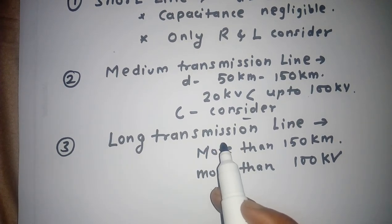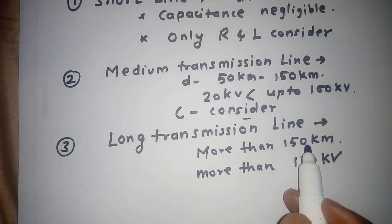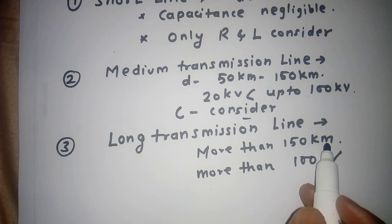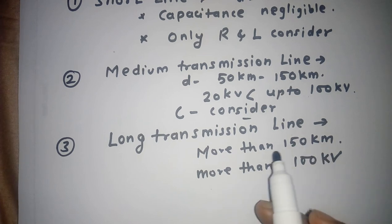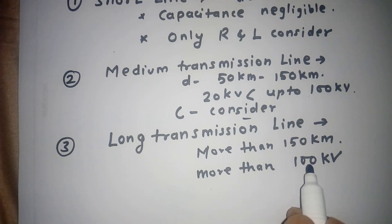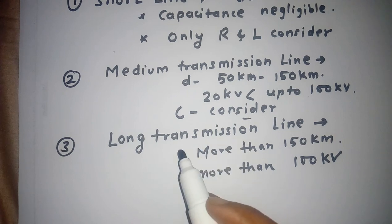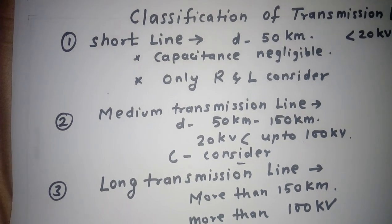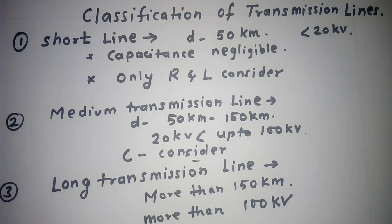The third type is called the long transmission line. Its length is more than 150 kilometers, and any line with more than 150 kilometers in length and more than 100 kilovolts in voltage level is classified as a long transmission line. This is all about the classification of transmission lines. Thank you very much.